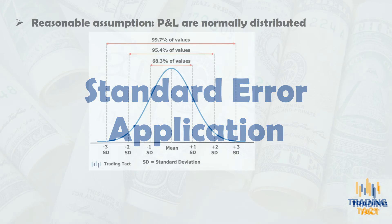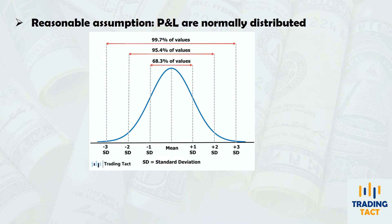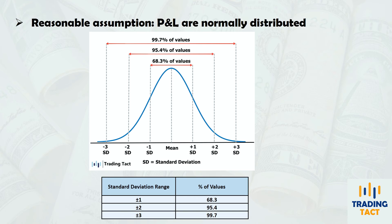It is usually a good assumption that the profits and losses in your backtest are normally distributed — in other words, they follow the famous bell curve. In a normal distribution, 95.4% of values lie between plus or minus two standard deviations, and 99.7% of values lie between plus or minus three standard deviations.